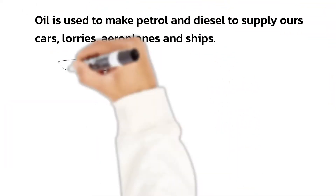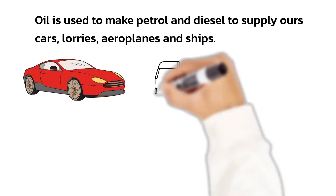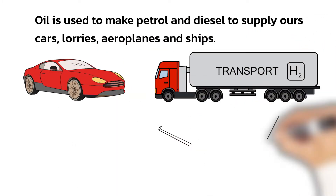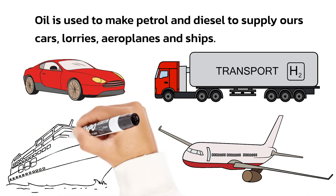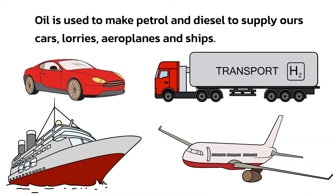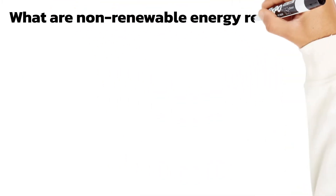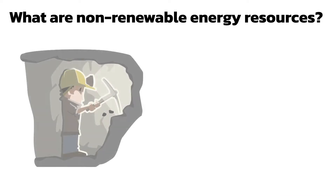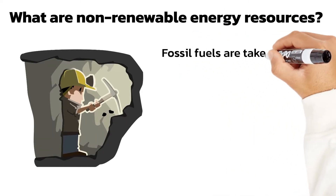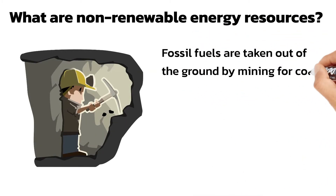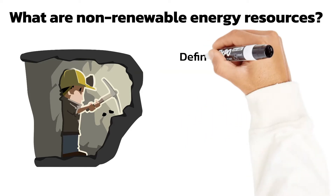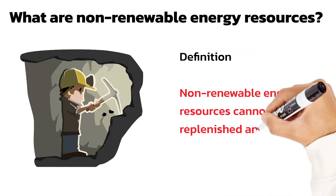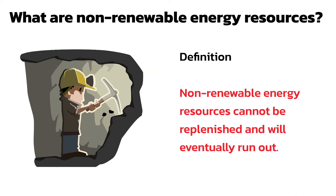Oil is used to make petrol and diesel to supply vehicles like cars, lorries, aeroplanes and ships. Fossil fuels are taken out of the ground by mining for coal and drilling for oil and natural gas. These are non-renewable energy resources. For your exam you will need to know that non-renewable energy resources cannot be replenished — in other words we can't make any more, so eventually they will run out.